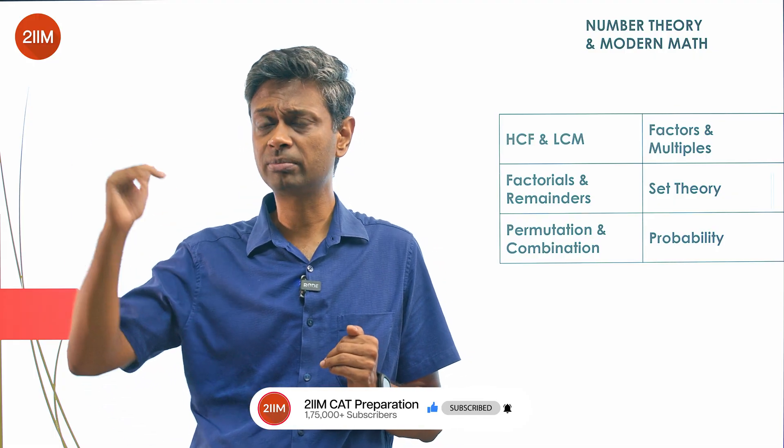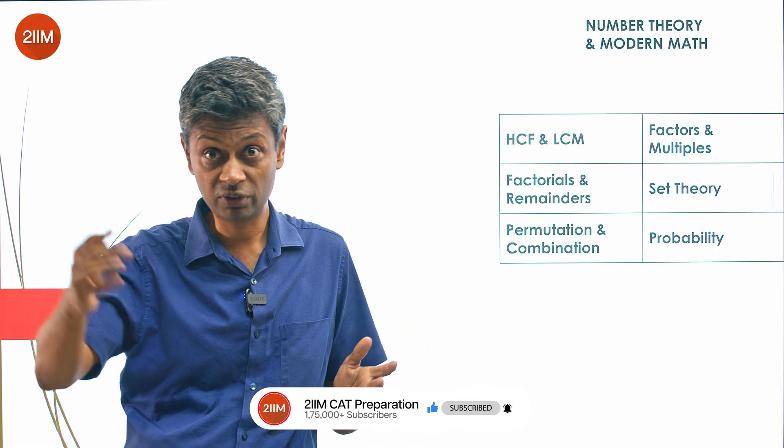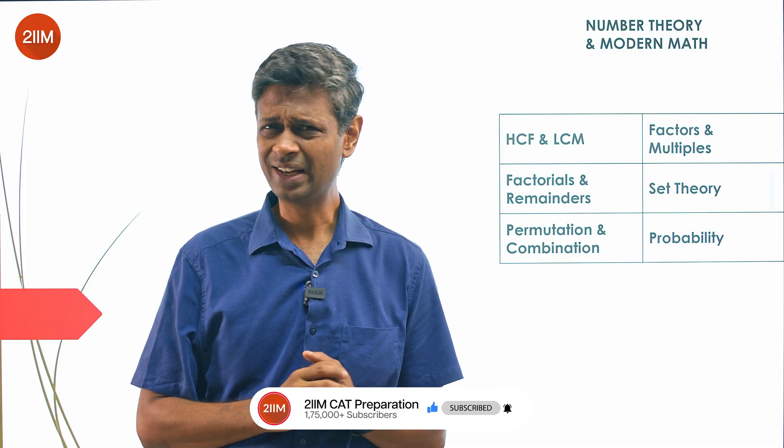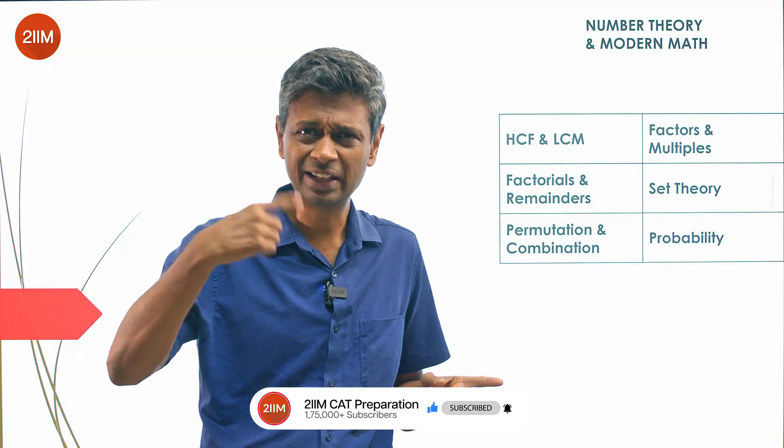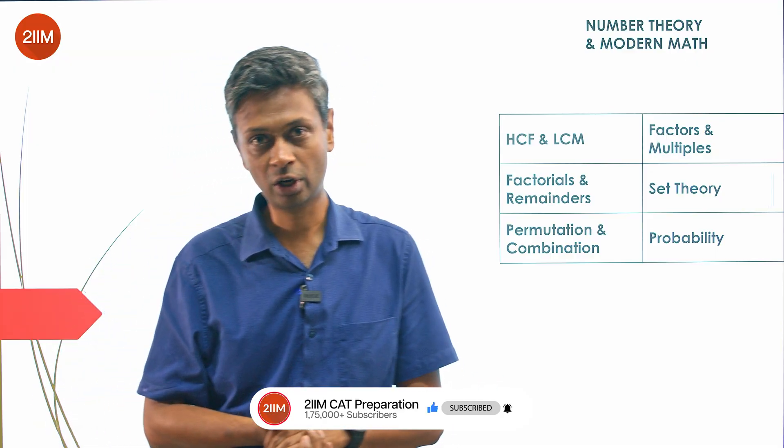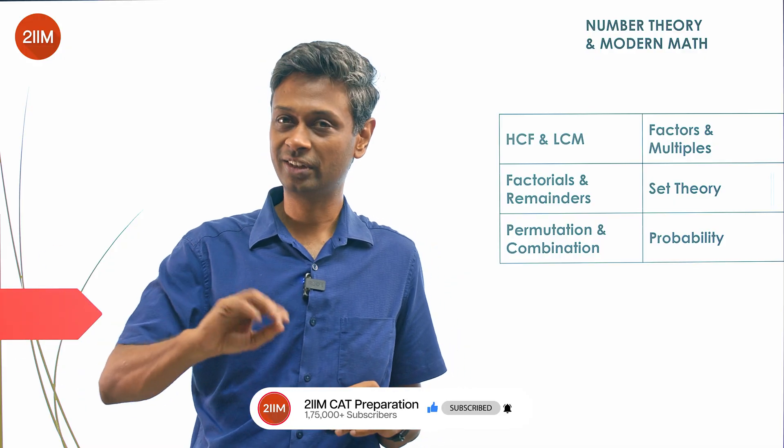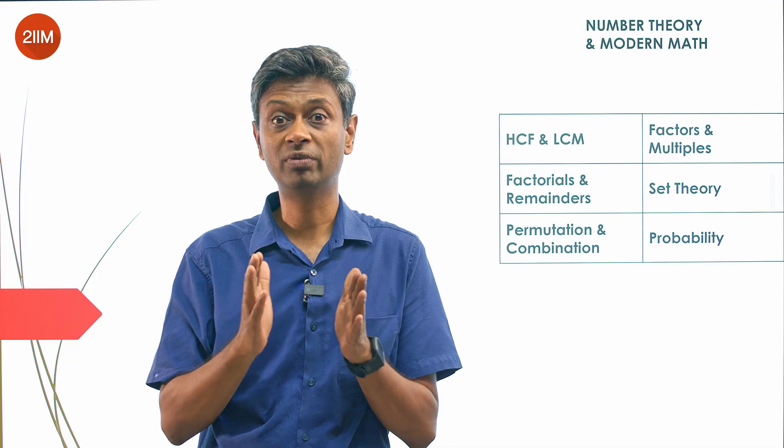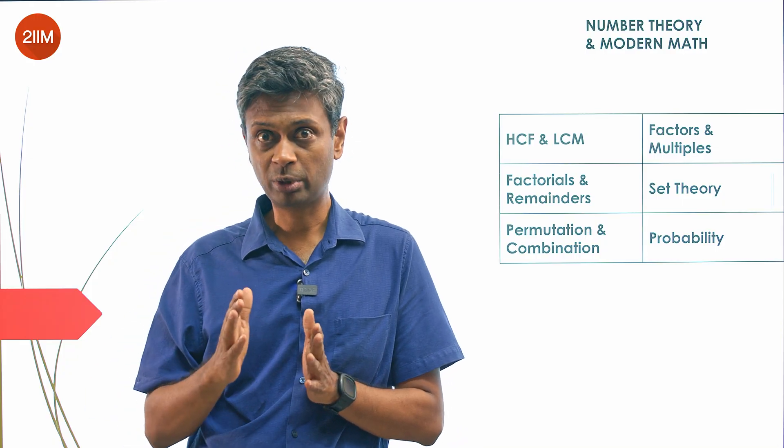Number systems sets the stage for some really tough mathematics - Euler's function, theorems, all kinds of things get added. Those don't get tested. Remainders, cyclicity gets tested. Fundas get tested. Methods and nuggets get tested. Deep theory doesn't get tested. So draw the boundaries of number systems well. Look at previous year questions after a point of time to get a sense of what this game is.